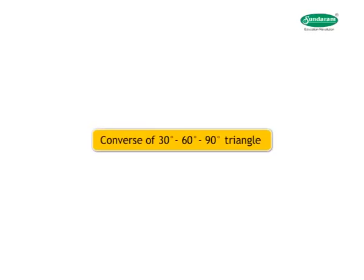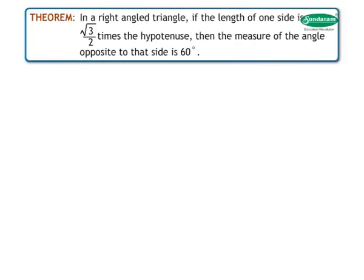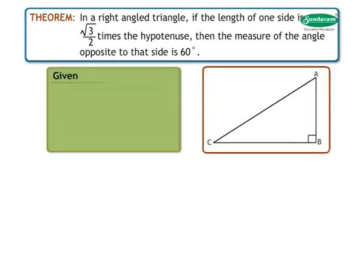Converse of the 30-60-90 degrees triangle: In a right-angled triangle, if the length of one side is root 3 upon 2 times the hypotenuse, then the measure of the angle opposite to that side is 60 degrees. Given: in triangle ABC, angle B is equal to 90 degrees and BC is equal to root 3 upon 2 into AC. To prove: angle A is equal to 60 degrees.